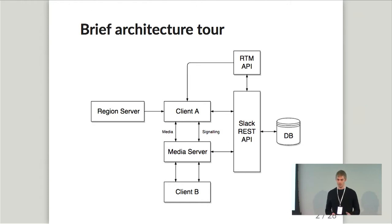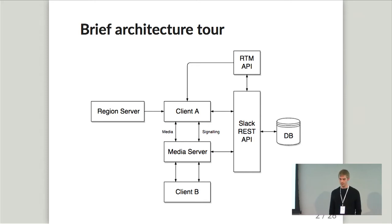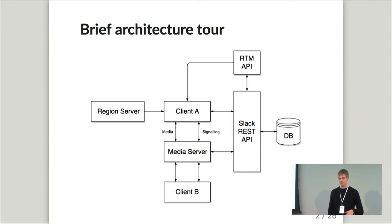To step quickly through how a client makes a call in the Slack architecture: first it talks to a region server to understand where it is and which media server it's going to connect to. It then makes some API calls to the Slack REST API where the call state is stored in the same database that the rest of the Slack clients store state in. That API call returns certain IDs, which media server to talk to, tokens, and so on. The rest of the call setup goes through the media server. Some of the client state is also updated via the real-time messaging API. But today I mainly want to talk about client-side development and our approach to it.